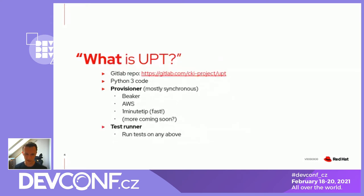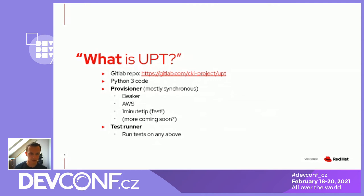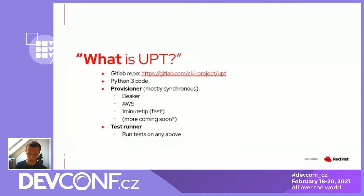So what is Upt? What the project actually is: it's a GitLab repo, and that's the only link in the presentation, so please note it down. It's a bit of Python 3 code. It has parts for provisioning machines in Beaker and AVS to some limited capacity, and with one-minute tip, which is very fast — a tool that can get you a VM in about a minute so you can run simple workloads or one-shot kernel tests. More coming soon.